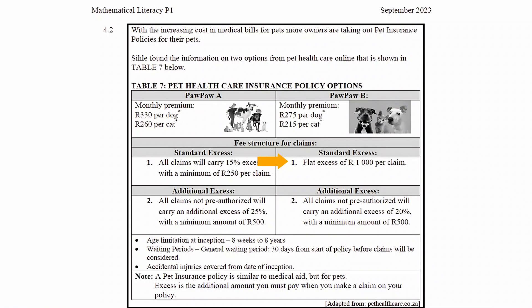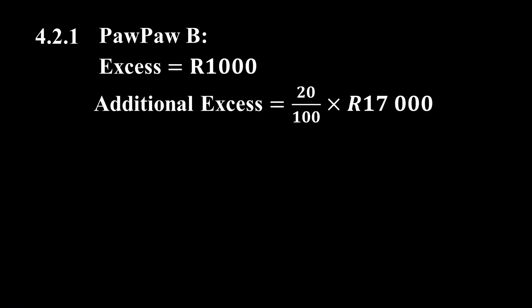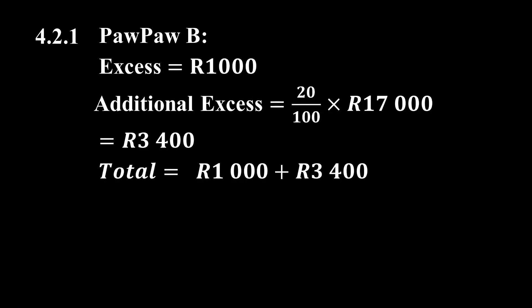Next we calculate the total amount payable for Paw Paw B. Paw Paw B carries a standard excess of 1,000 rand per claim, plus an additional excess for claims not pre-authorized of 20%. The additional excess is 20 divided by 100 multiplied by 17,000 rand, which equals 3,400 rand. So the total amount payable for Paw Paw B is 1,000 rand plus 3,400 rand, which equals 4,400 rand.